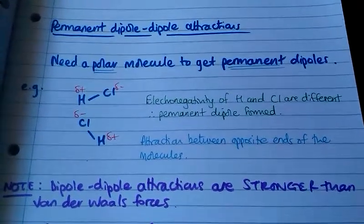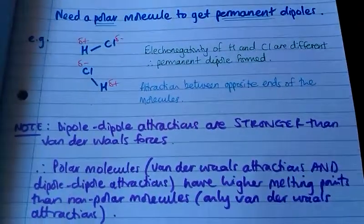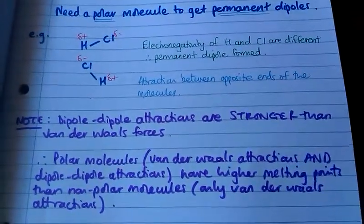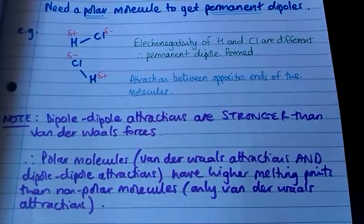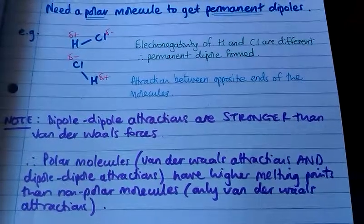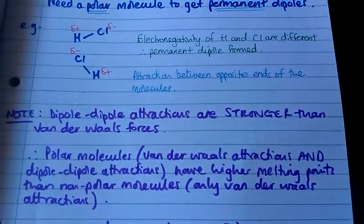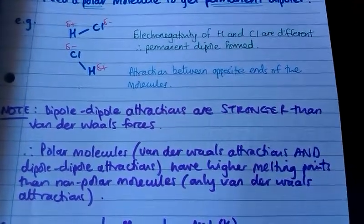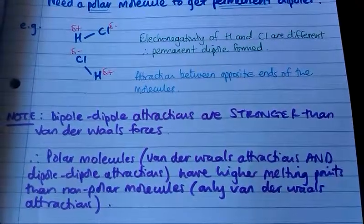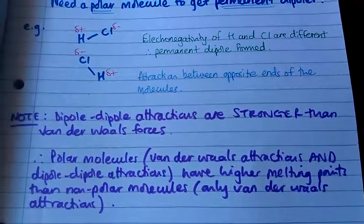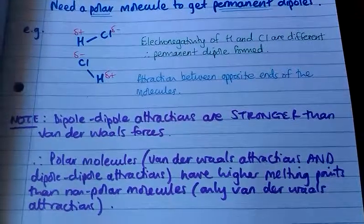This means that polar molecules, which have van der Waals attractions and dipole-dipole attractions between them, have a higher melting point than non-polar molecules, which only have van der Waals attractions between those molecules.